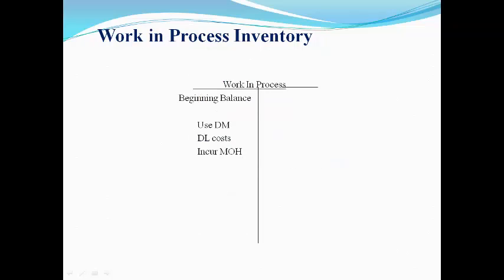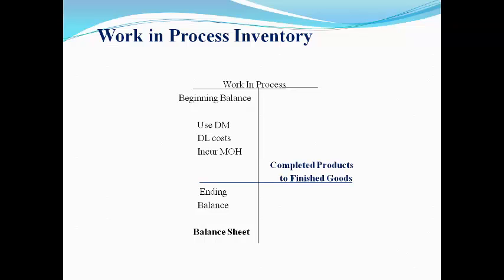All product costs are recorded in the inventory account work in process. The ending balance is determined by estimating the value of goods still remaining on the production line. The difference is the cost that was finished during the period; these costs are moved to finished goods.